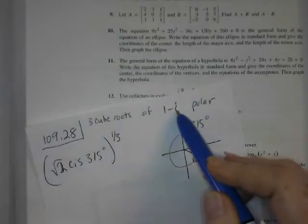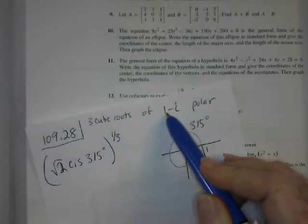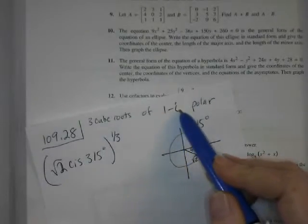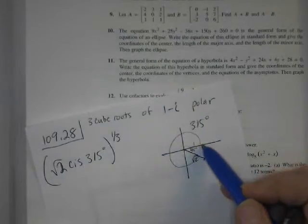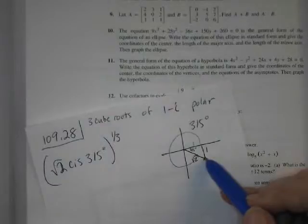So this is in rectangular form, so this is basically can be seen as 1 comma negative 1, because that's negative 1 i. So 1 comma negative 1 right down there.